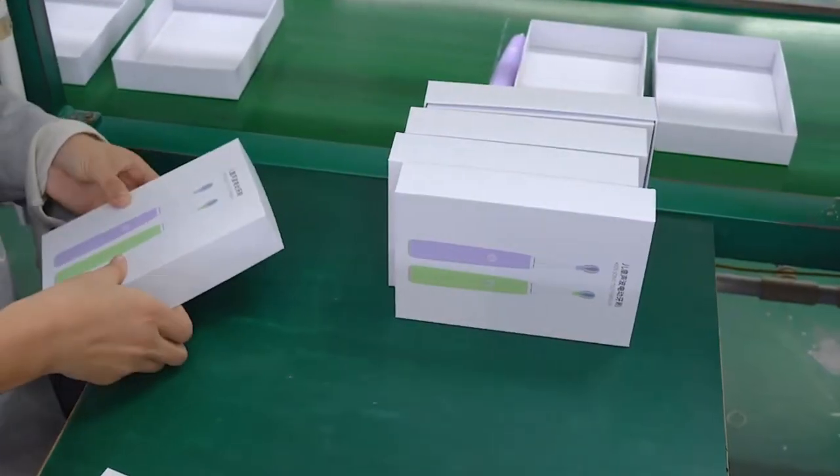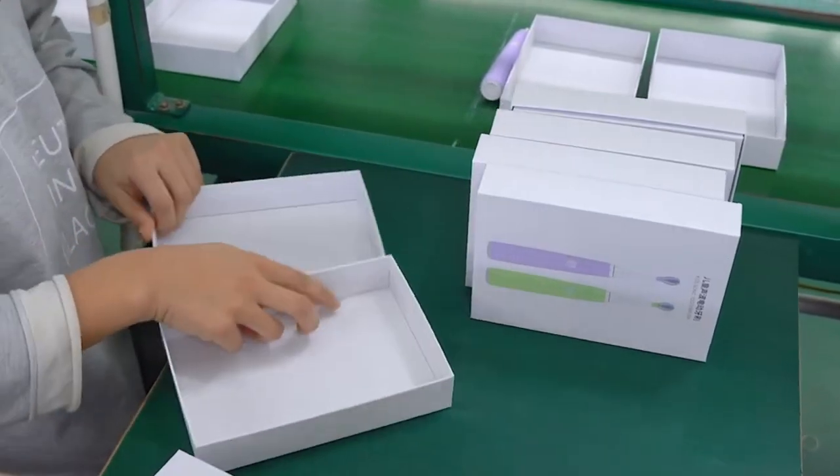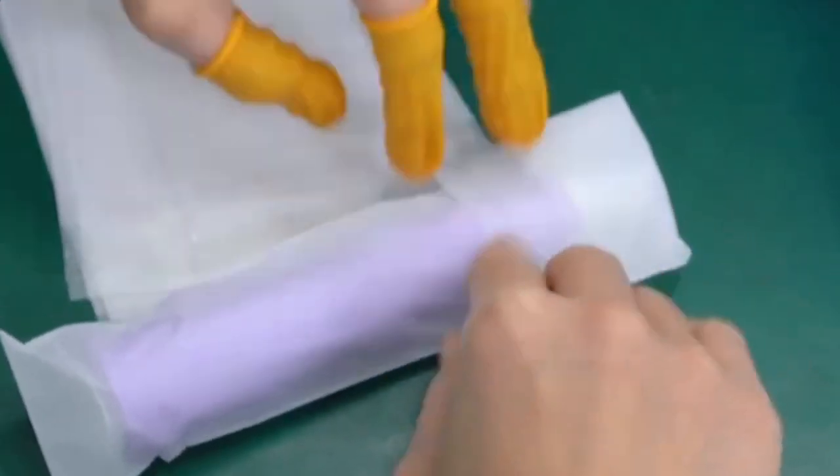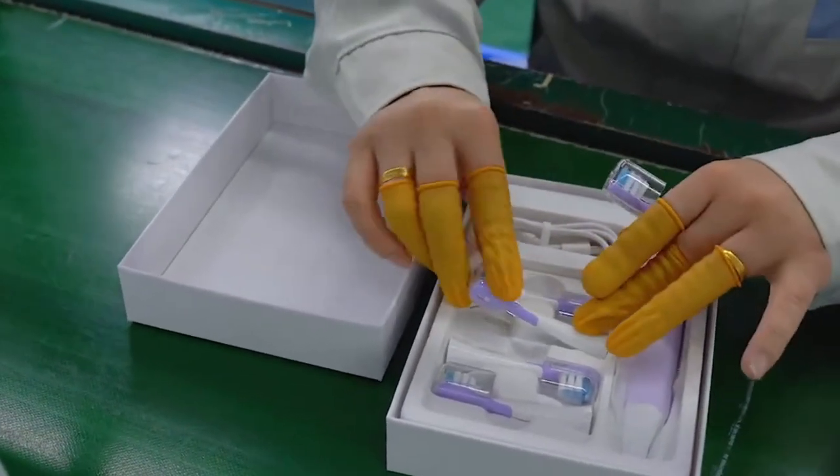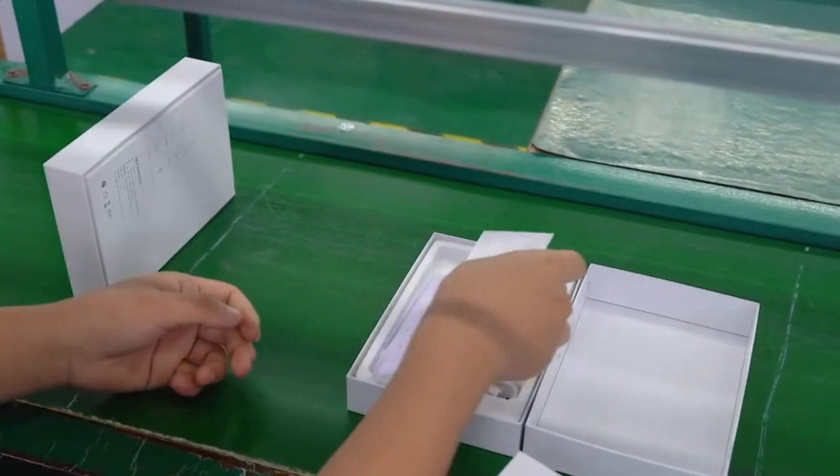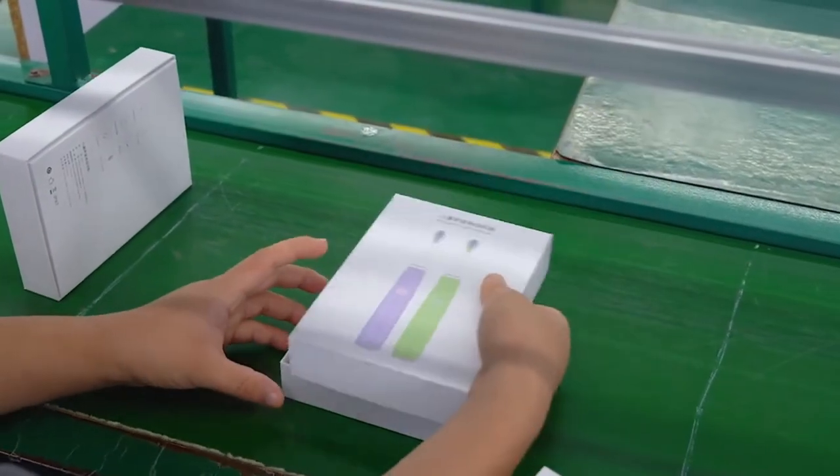Finally, the device is cleaned, packaged, and shipped. Boxes include extra heads, charging docks, and manuals. Labels and barcodes are applied before pallets are loaded for global distribution.